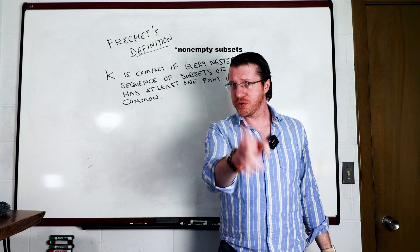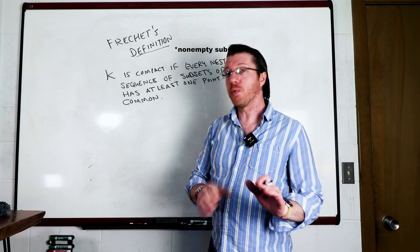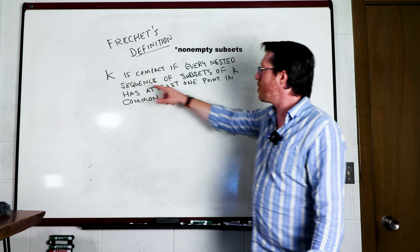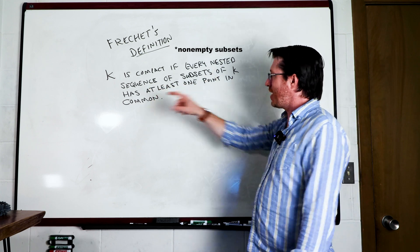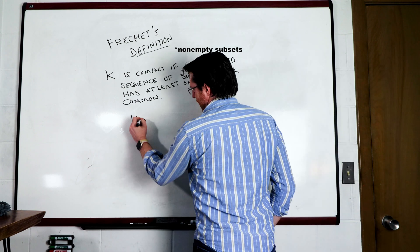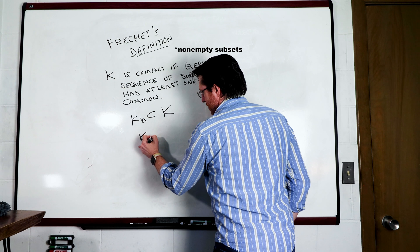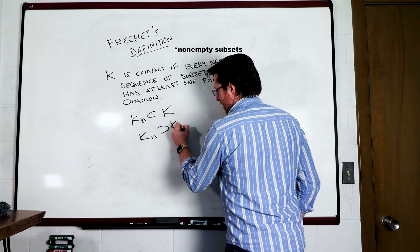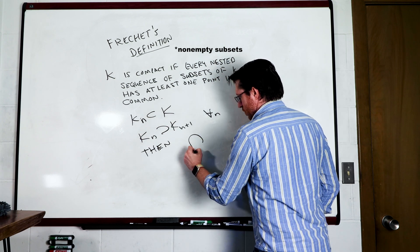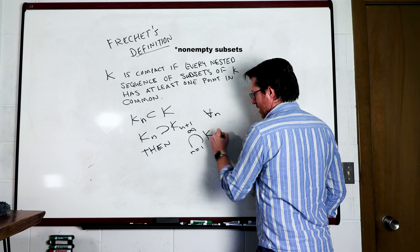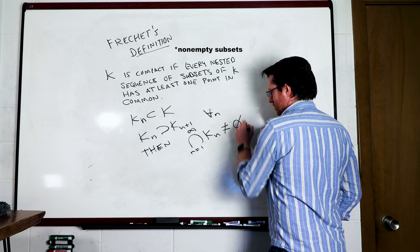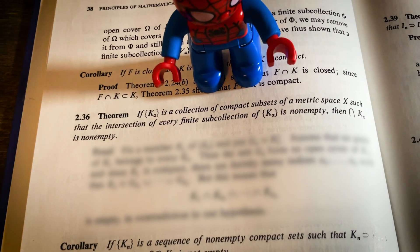What is truly remarkable about the Heine-Borel theorem is that it basically took us from knowing only finite sets are compact to almost every set you encounter in the reals being a closure away from being a compact set, provided it's bounded. Frechet's original definition of compactness is actually different: he said K is compact if every nested sequence of subsets of K — where K_n contains K_{n+1} — has the intersection over all n from one to infinity non-empty. This is actually a consequence of the finite intersection property theorem in Rudin — we can talk about that later.